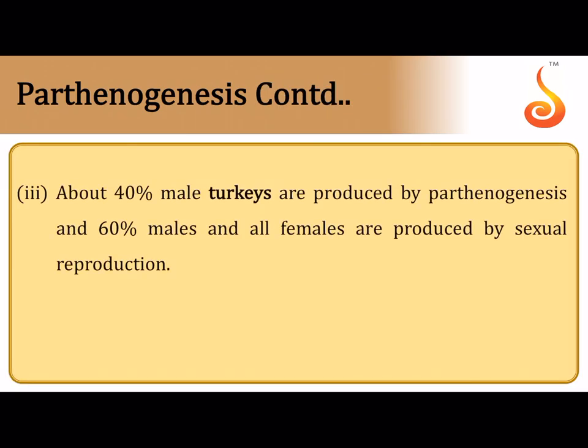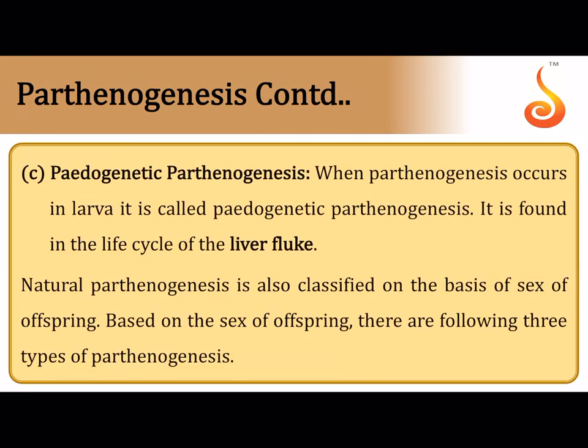In turkeys, about 40% of males are produced by parthenogenesis. The remaining 60% of males and all females are produced by sexual reproduction.